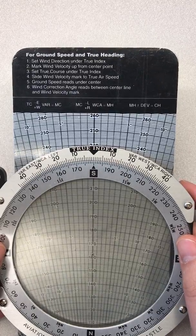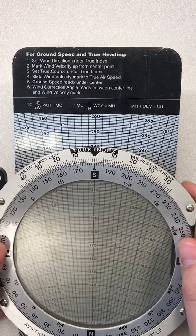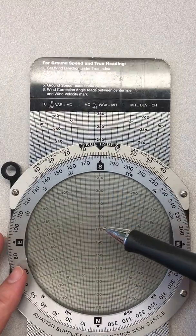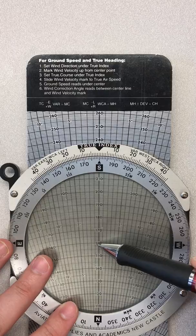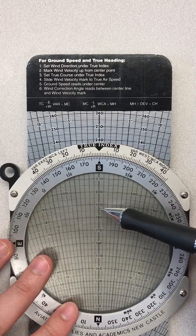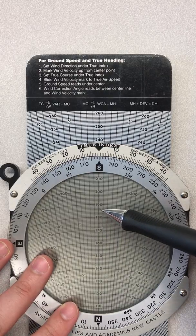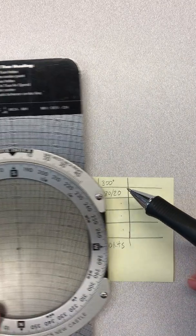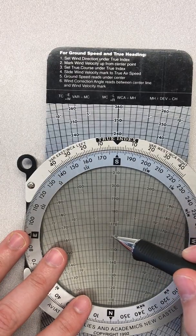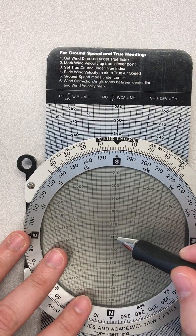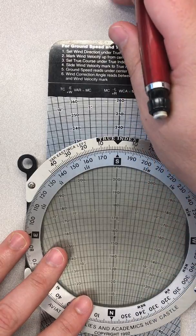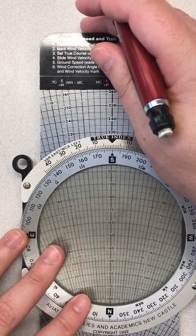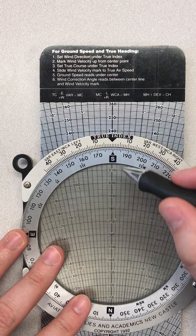For step two, it says to mark the wind velocity up from center point. So all we do here is we find our center point, and looks like I've got mine set around 160. This is the center point. We're going to use a pencil and go straight up however many units our wind speed is. So from the center point up however strong the winds are, and our winds are at 20 knots. So 160, it doesn't matter where you start, as long as you go 20 straight up it's going to do it correctly.